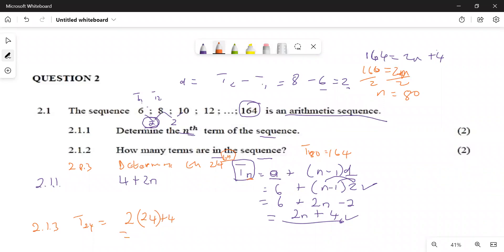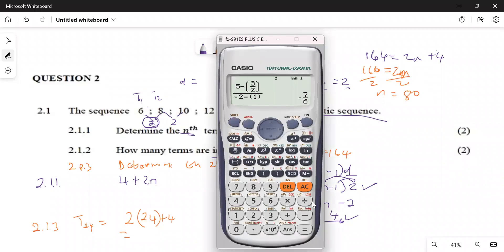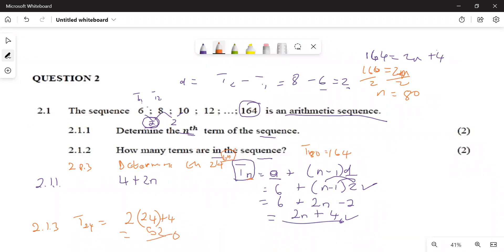We have 2.1.3. We'll have T24, and then we'll come and have 2 multiplied by, instead of n, 24, plus 4. If you type this in your calculator, 2 multiplied by 24 plus 4, that's 52. These are the questions that we can expect. These are the three questions that we can expect.